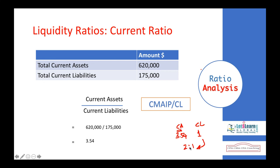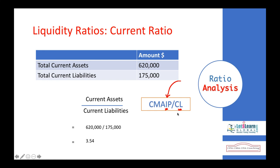The current ratio tells us the amount of current assets maintained relative to current liabilities — for every one dollar of current liability, how much current asset are we maintaining? The formula is current assets divided by current liabilities. From our balance sheet, current assets of $620,000 divided by current liabilities of $175,000 gives a current ratio of 3.54. For every one dollar of current liability, the company has $3.54 of current assets.